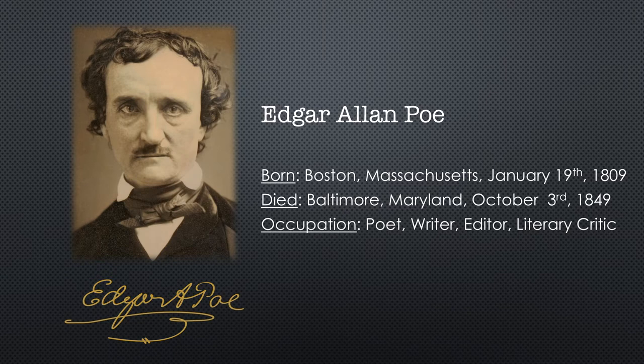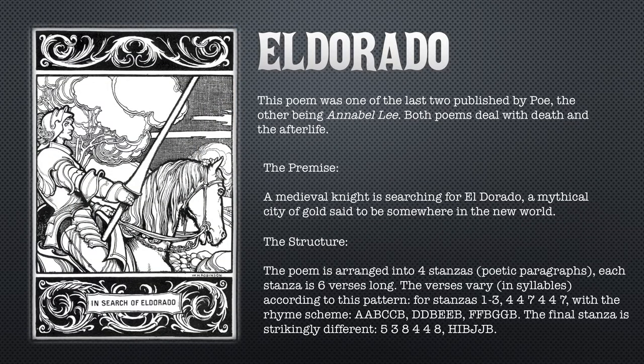The poem you are studying is called El Dorado. This is one of the last two poems published by Poe, the other being Annabel Lee. Both poems deal with the theme of death and the afterlife. The premise of this poem is that a medieval knight is searching for El Dorado — a mythical city of gold said to be somewhere in the New World. The structure of this poem is unusual, and this structure is part of the reason the poem is so successful and rather easy to remember. Once you've heard it, it's very difficult to forget.